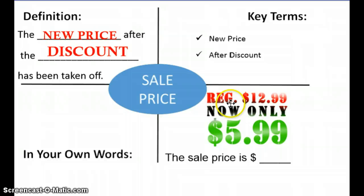For example, regular or original price was $12.99. Now it is only $5.99, so the sale price would be $5.99. It is the price after we took off the discount from $12.99. And again in this box you could put in your own words.